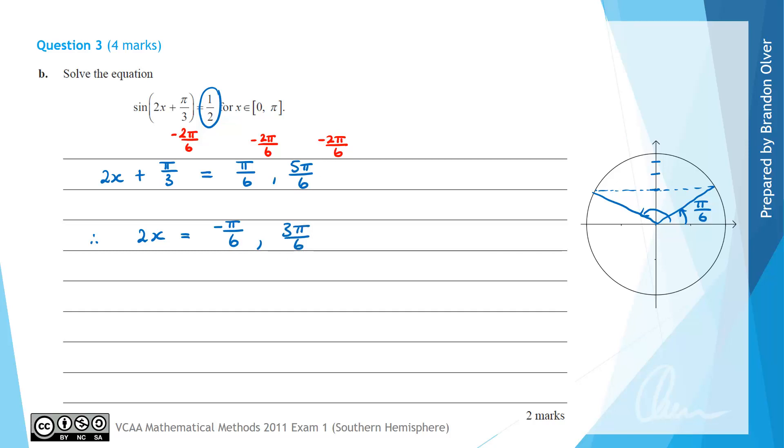Now we need to get to x from 2x, so the opposite of multiplying by 2 is to divide by 2, or I'm going to multiply by a half as I think that's easier when working with fractions. So we multiply every term by a half, therefore x is going to equal negative pi over 12 or 3 pi over 12, which we'll write as pi over 4.